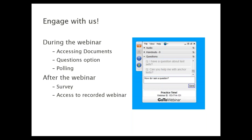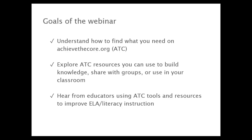We'll ask you to engage with us throughout the webinar. On your control panel, usually on the right side of your screen, you can access handouts, answer questions by typing in your answers, and engage through polls. After the webinar, we'll ask you to complete a short survey. You will receive access to the recorded webinar, handout, and PowerPoint presentation about 24 to 48 hours after the end of the webinar. We have three main goals tonight: understand how to find what you need on achievethecore.org, explore resources to use in building knowledge, and hear from educators who use the tools to improve their ELA and literacy instruction.